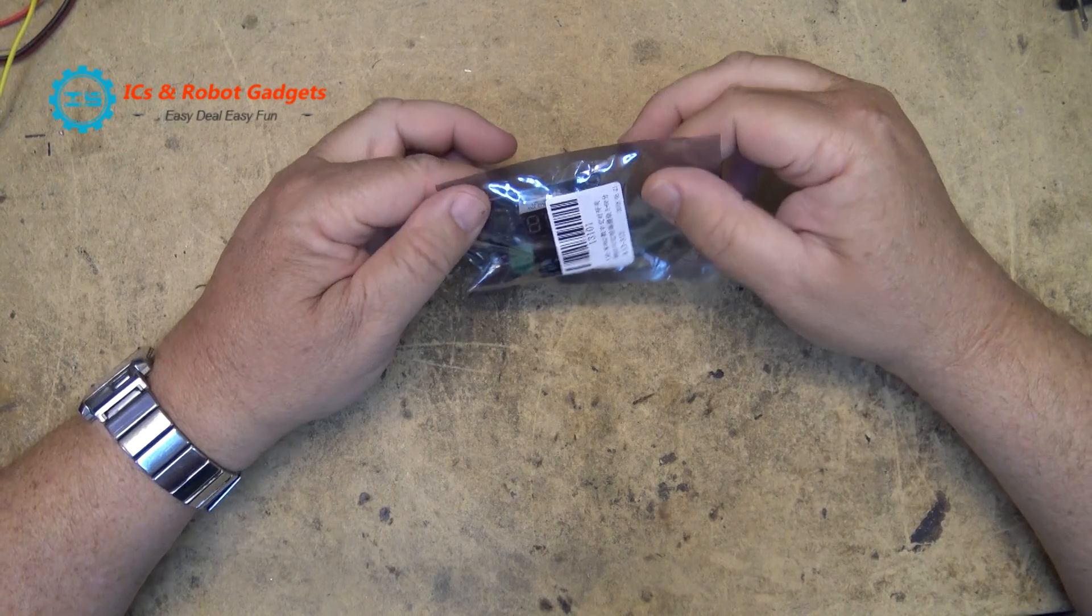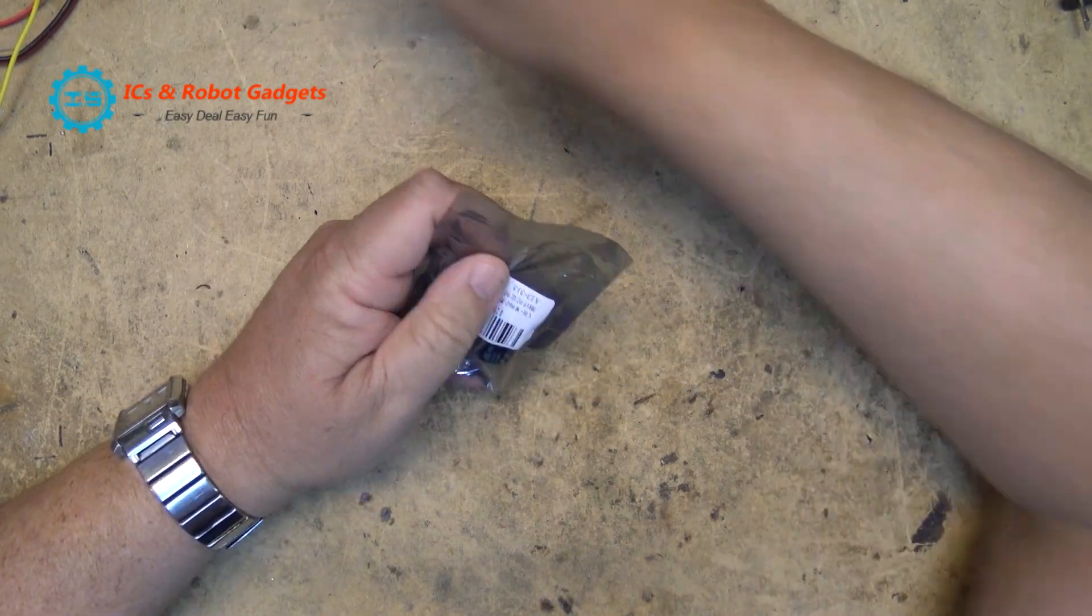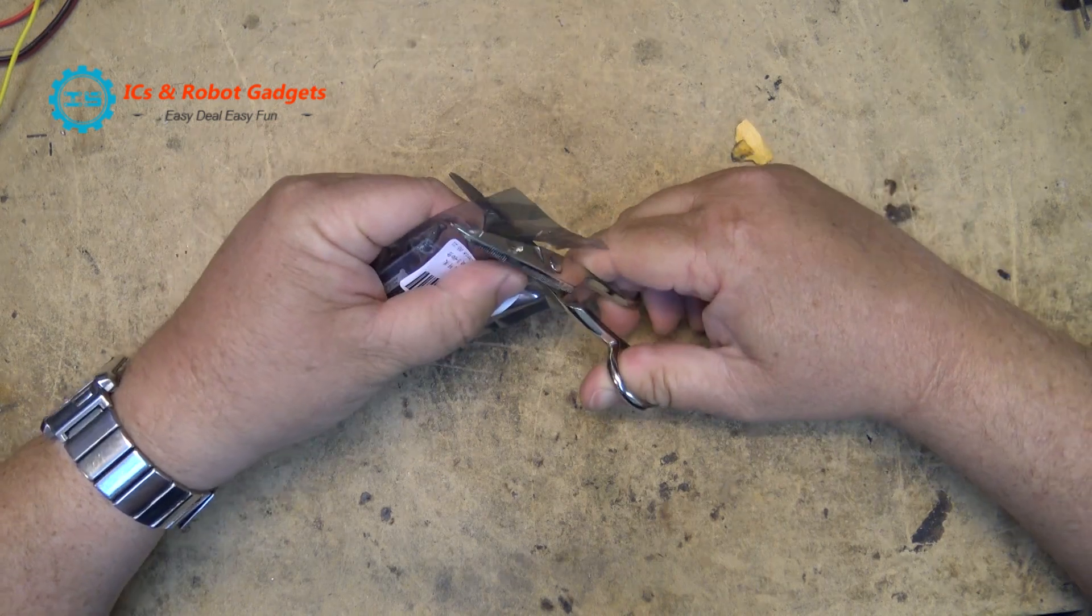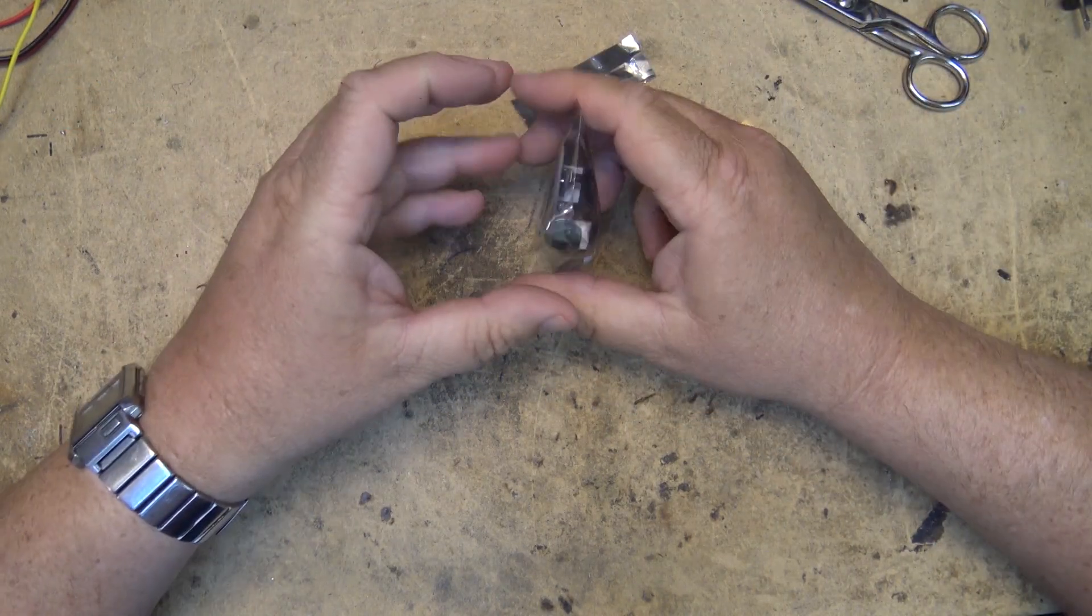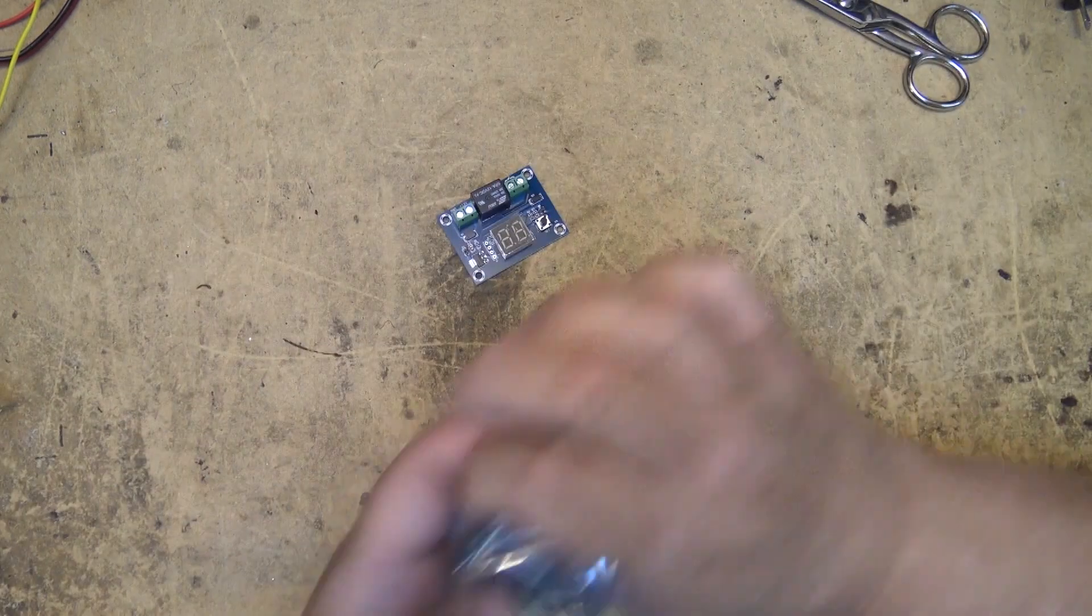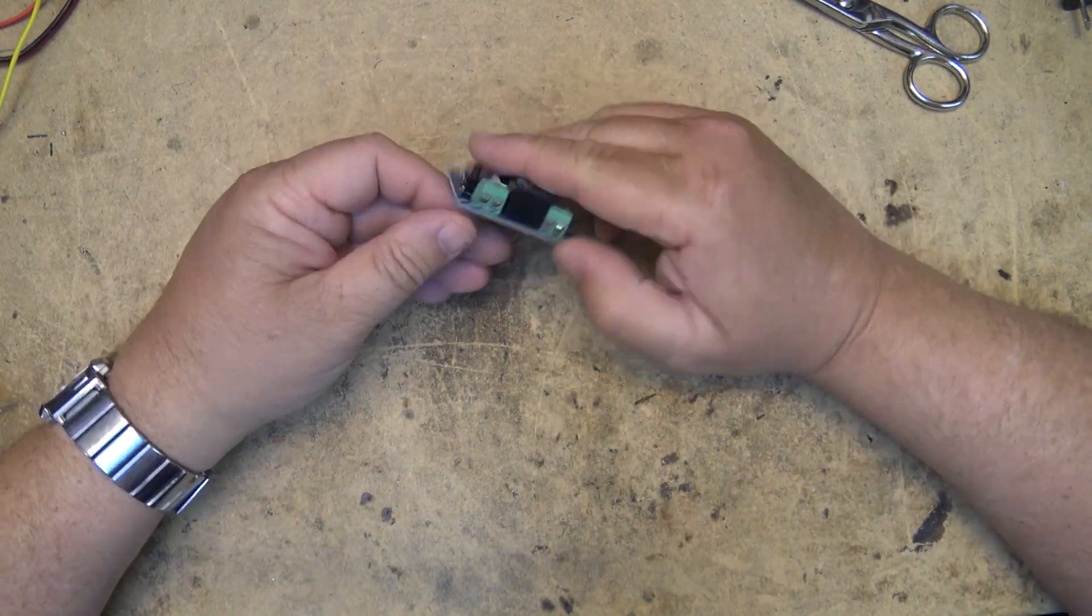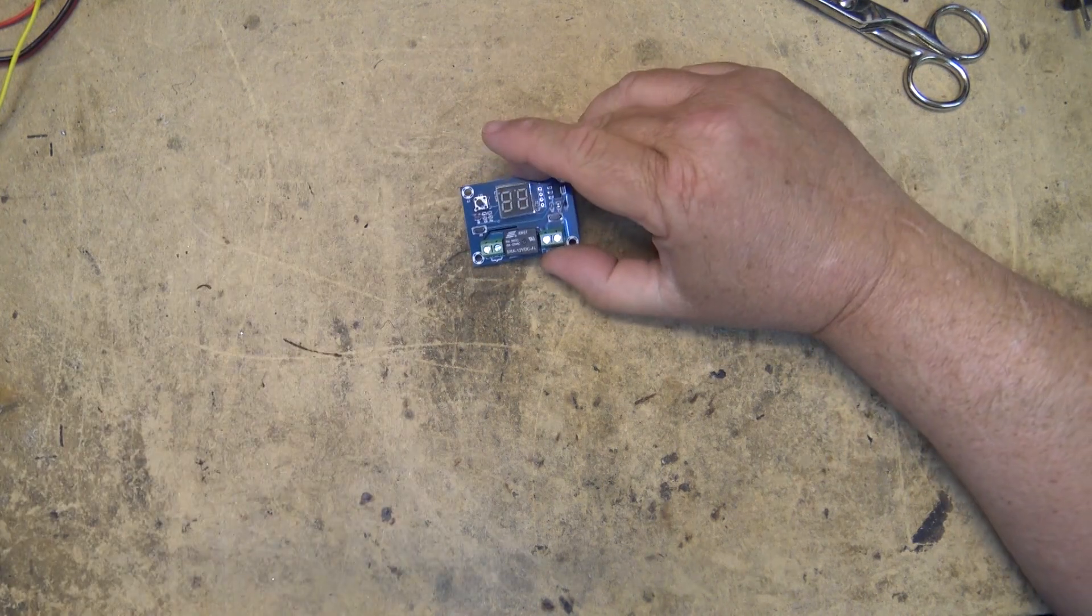So today it's time for another demo of a little module that I got from IC station. This one here is a digital countdown timer which can operate anywhere from 1 to 60 minutes and 1 to 24 hours. If we take a look at this module, this is the first time I've seen it.